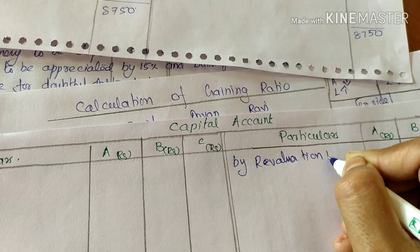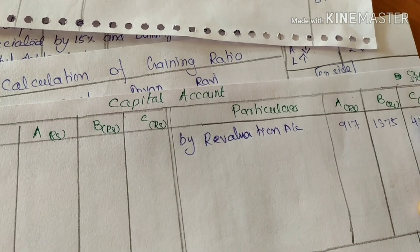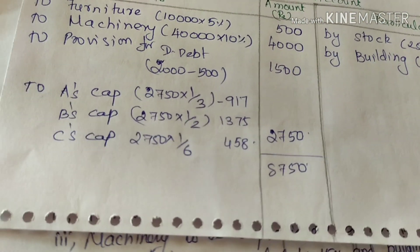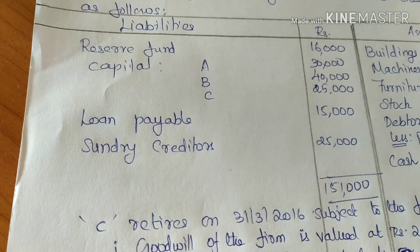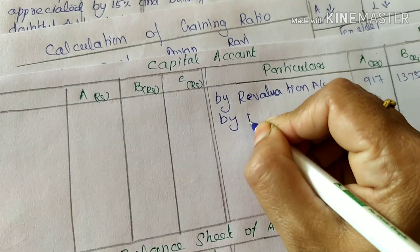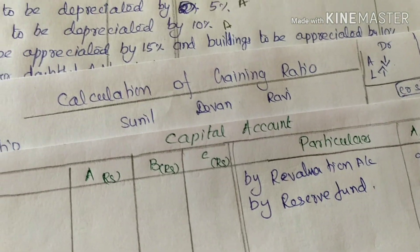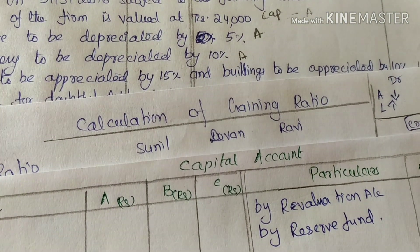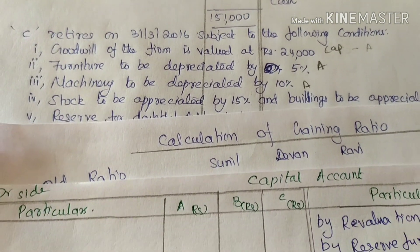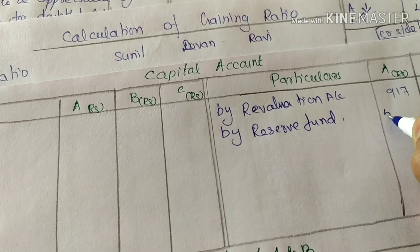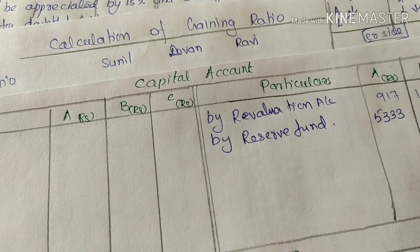By revaluation account, the amounts are 917, 1,375, and 458 credited to capital accounts. Next, the reserve fund is distributed among partners in their old profit sharing ratio. The reserve fund balance is 10,000, distributed as approximately 5,333, and 2,667.